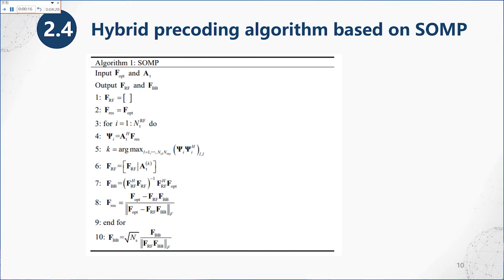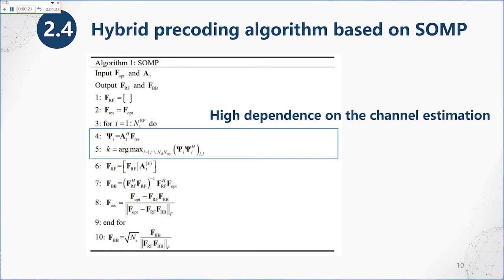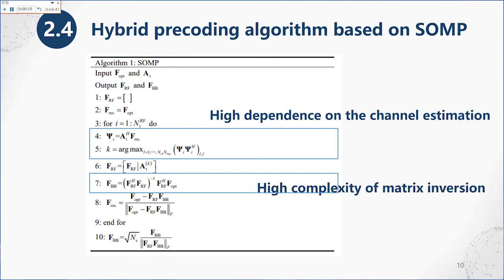The SOMP algorithm mainly has two issues: the first is high dependence on channel estimation, and the second is high complexity of matrix inverses.